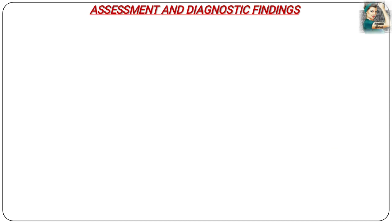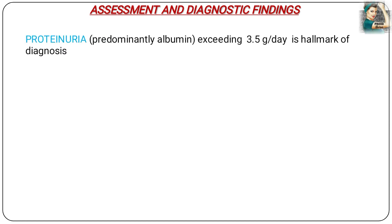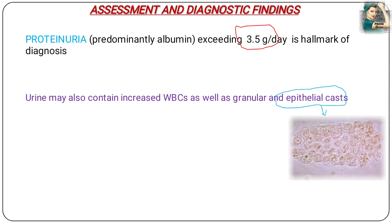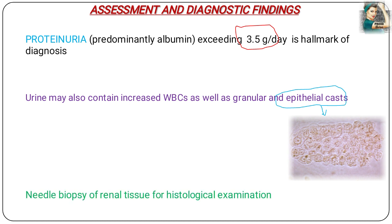Now how can we assess and diagnose nephrotic syndrome? The first finding is proteinuria — the presence of protein in the urine — at 3.5 grams per day, which is a hallmark diagnosis of nephrotic syndrome. The urine may also contain increased WBCs and granular and epithelial casts as a result of increased permeability of the glomerulus. The doctor may also recommend a needle biopsy of renal tissue for histological examination to confirm the diagnosis of nephrotic syndrome.